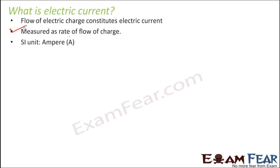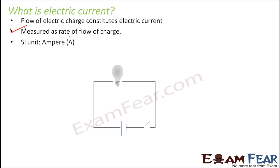The SI unit to measure current is ampere. Now let me give you a small example to show that electric current flows through a circuit. A circuit is a new term here — just look at this and you will understand what I mean by circuit and electric current.